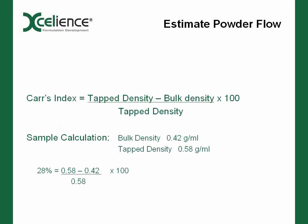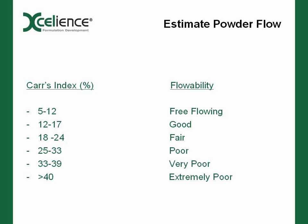The next thing we want to talk about is the Carr Index, which we use as an indication of how our material is going to behave. The Carr Index is determined by taking the tap density minus the bulk density, divided by the tap density, times 100. In our sample calculation we come up with a Carr Index of 28%, using fairly common tap densities of about 0.6 and a bulk density of about 0.4.